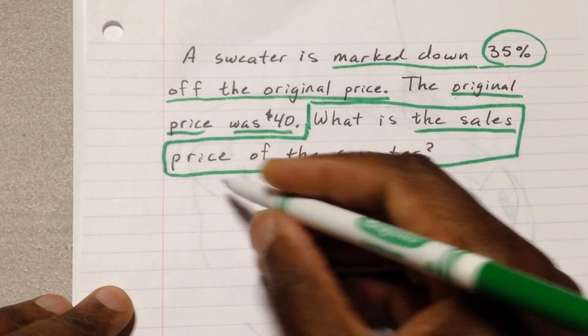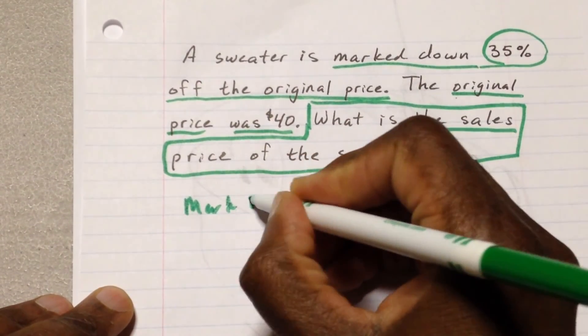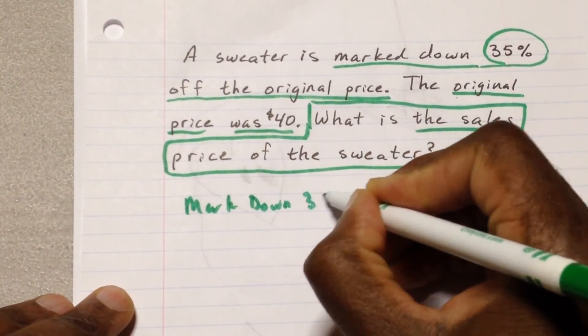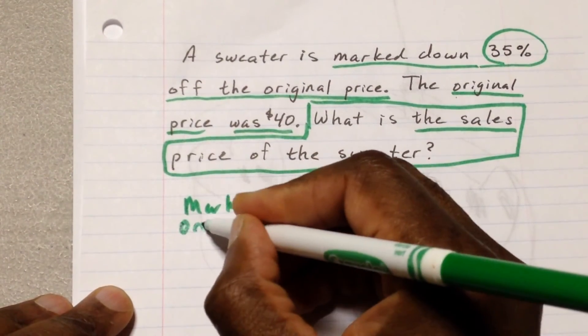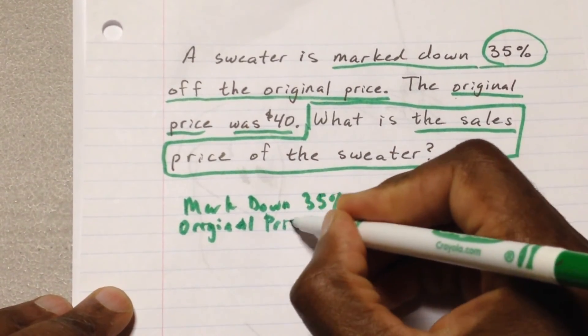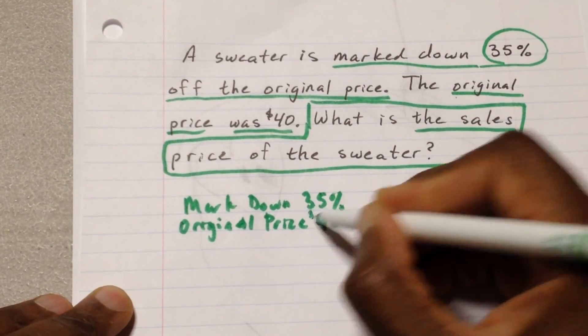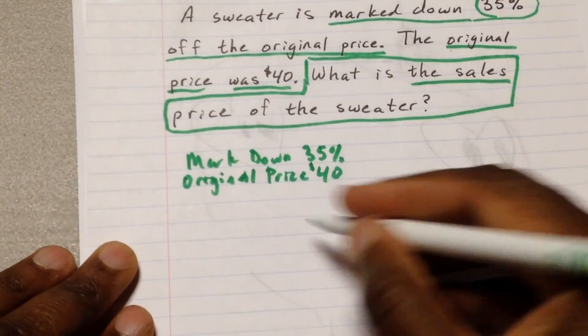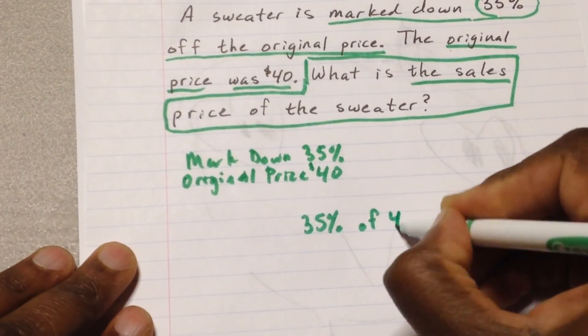We have the markdown is 35%. While we know that the price, the original price, or what was once the sales price, right, is $40. So let's do the math. It's going to be 35% of $40.